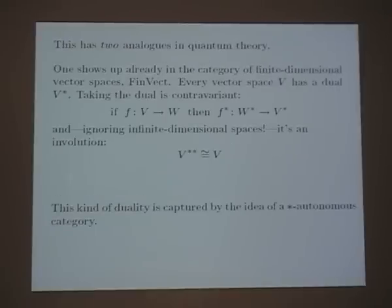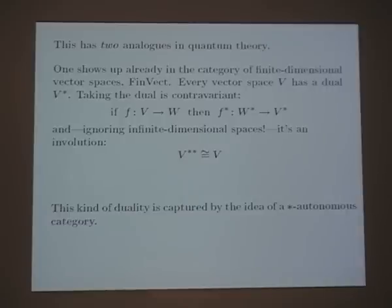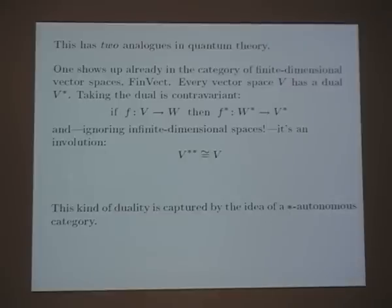This idea in logic shows up in two analogous ways in quantum theory, and the fact that it shows up twice is very important. First, already in the category of finite-dimensional vector spaces — not even Hilbert spaces yet — every vector space has a dual. If you have a linear operator from one vector space to another, you get an adjoint operator going back between the duals. If you restrict to finite-dimensional vector spaces, taking the double dual gets you back where you started.